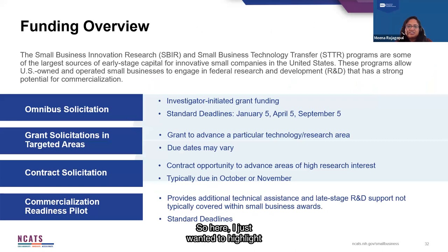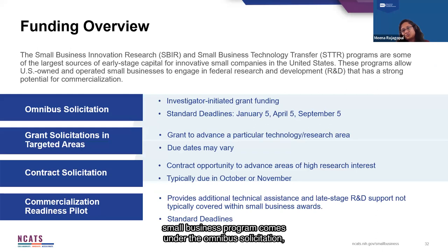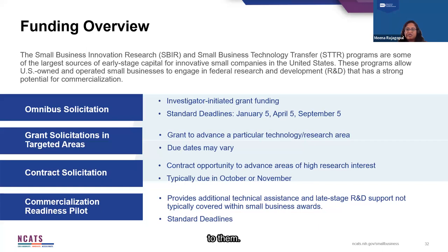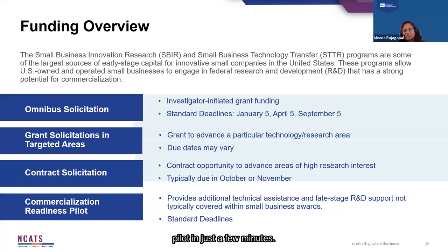I just wanted to highlight some of the different funding mechanisms available to small business entrepreneurs. Over 80% of the applications to the NIH small business program come under the omnibus solicitation, which is an investigator-initiated grant funding mechanism with typically three standard deadlines. The upcoming one is actually September 5th, which is next week. Each institute also puts out targeted funding announcements that are of high priority to them, so please check out our websites to learn more. I'll get to contract solicitations and the commercialization readiness pilot in just a few minutes.